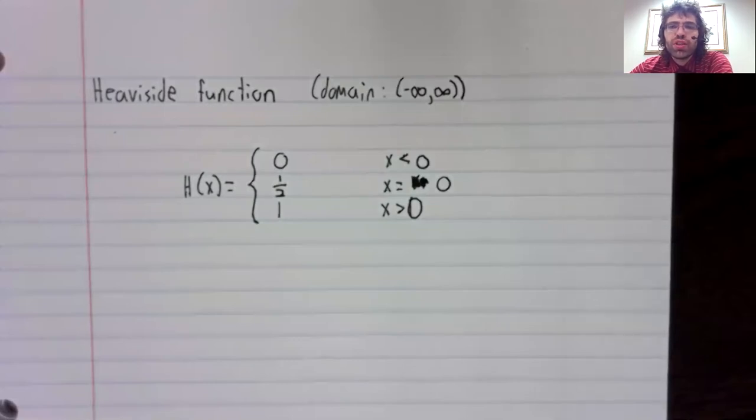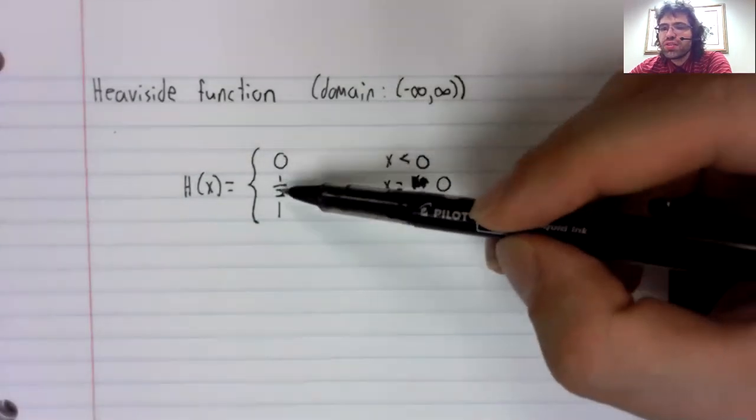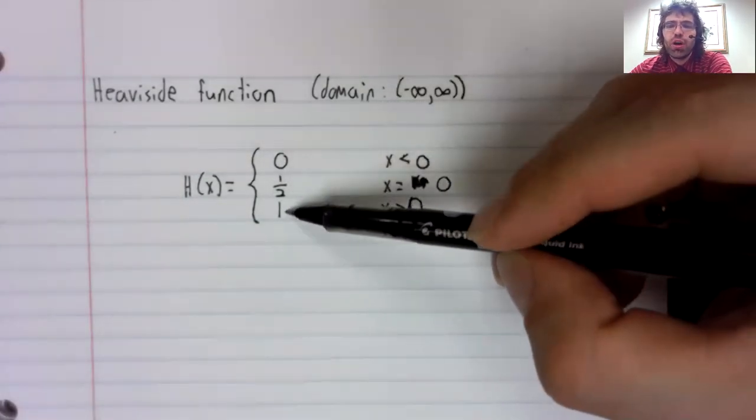The Heaviside function shows up in electrical engineering. It corresponds to flipping a switch. The switch is off, it's flipped, it's on.